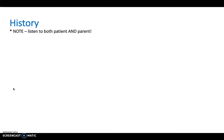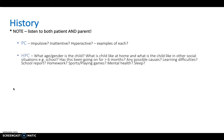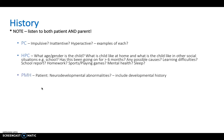In history taking, it is important to listen to both the patient and the parent — do not focus on just one. The presenting complaint should establish whether the child is impulsive, inattentive, or hyperactive, with specific examples. Key history questions include the child's age and gender, what the child is like at home and in other social situations such as school, and whether symptoms have been present for more than six months. Also ask about learning difficulties, school reports, sports, mental health, and sleep.